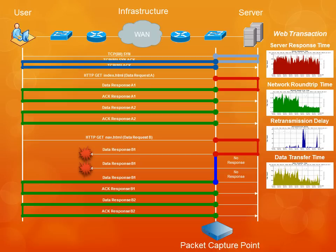The fourth metric is data transfer time, defined as the amount of time required to transmit all the packets of a response to the client. It's measured by taking the delta between the first packet of a response and the last packet of a response. Since data transfer time can be affected by the server in the case of poor hardware performance, the network in the case of large network round trip times or high packet loss, or the application behavior itself — large volume responses will obviously take longer to transmit than small volume responses — the best way to tell if there's a problem is to compare the current value to the historic norm to determine if there's a significant deviation. Deviations in data transfer time can indicate problems in an application only in the absence of significant deviations in server response time, network round trip time, and retransmission delay.